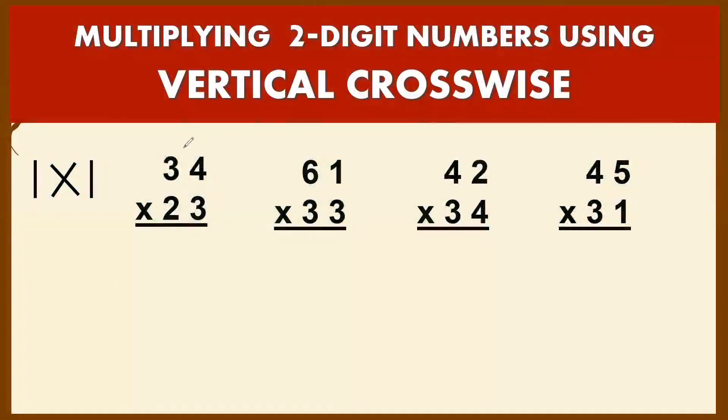Our second set of examples involves carrying. For example, 34 times 23. We start from the first column: 4 times 3, which gives you 12. So you bring down 2 and carry 1. Then you get the crosswise product.